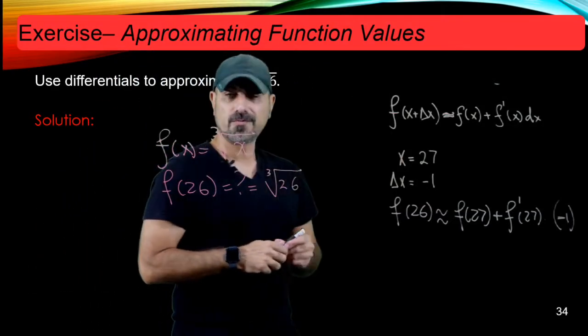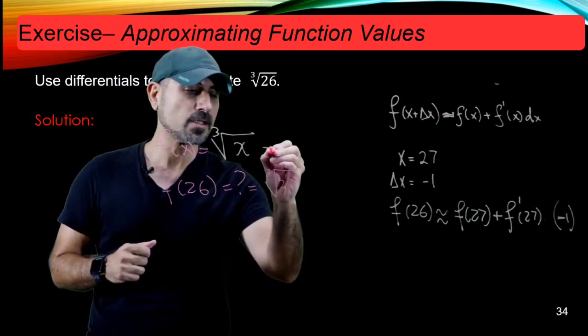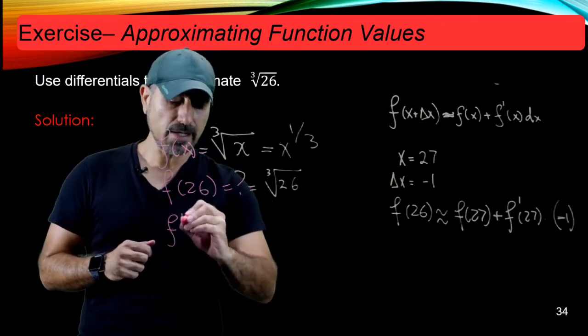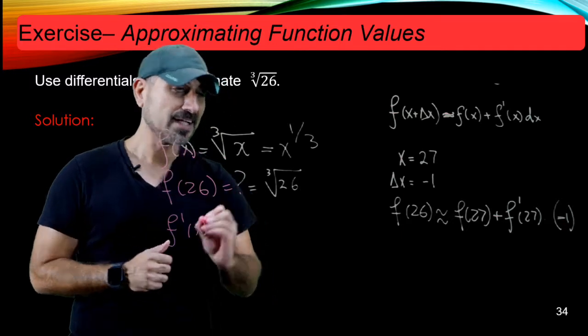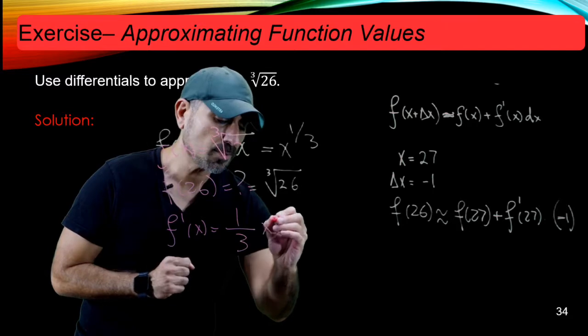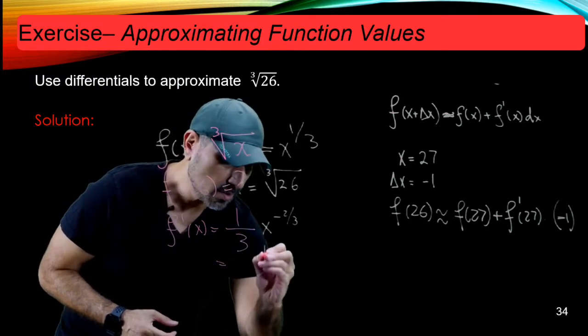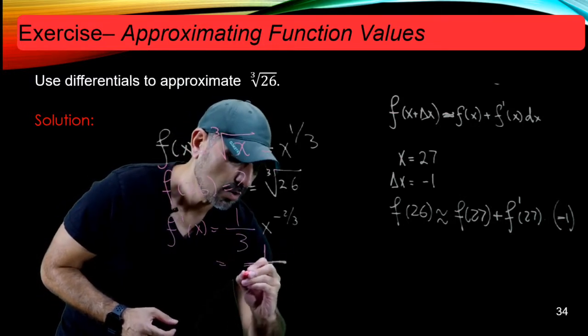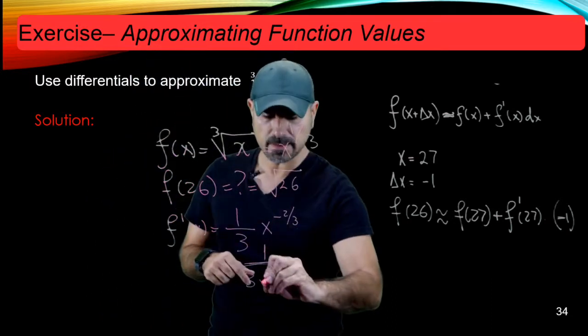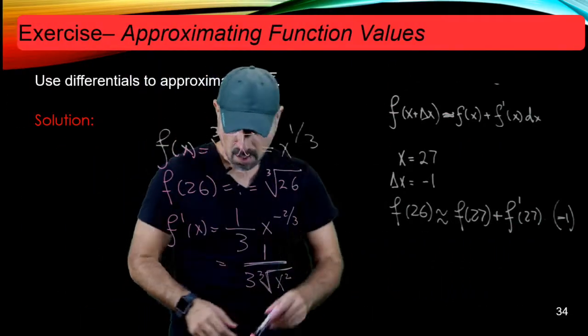So for this purpose, we need f prime of x. Why don't we find f prime of x? But first, let's write it in power form. So x to the power of 1/3, so that f prime of x after the application of the power rule is 1/3 x to the power of negative 2/3. But I can use the reciprocal here. So it's 1 over 3 times x to the power of 2/3, but that's the cubic root of x squared.